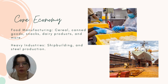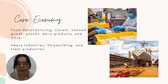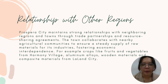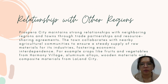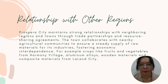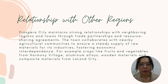Prosperity focuses on producing goods for both domestic consumption and exports, driving economic growth and generating employment opportunities for its residents. Prosperity maintains strong relationships with neighboring regions and towns through trade partnerships and resource-sharing agreements. The town collaborates with nearby agricultural communities to ensure a steady supply of raw materials for its industries, fostering economic interdependence. For example, crops, foods, and vegetables from Harmony Verge, oils, wooden materials, and composite materials from London City.